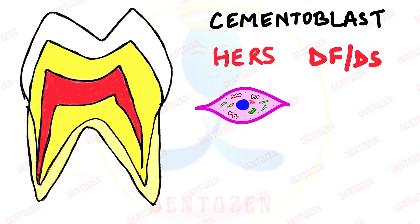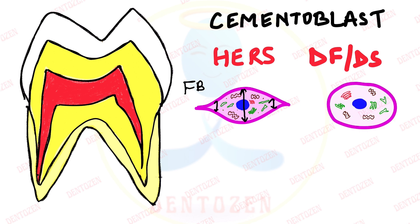Now let's see how these two types of cementoblasts differ. The HERS-derived ones resemble fibroblast cells — they are spindle-shaped or fusiform-shaped, wide in the center and narrow at the edges. The dental follicle-derived ones resemble osteoblast cells — they are ovoid or polygonal. We need to know about these two types because the HERS-derived ones form cementum in the coronal region of the root, while the dental follicle-derived ones form cementum in the apical region.